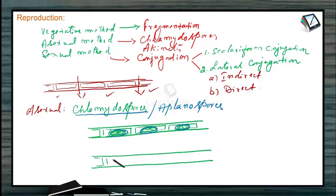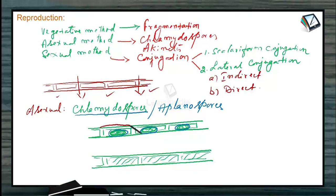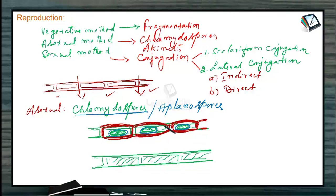Echinates: in echinates, the protoplasm does not condense. The cell remains as it is, and each cell develops or forms a thick wall around it. This thick wall makes it resistant to unfavorable conditions, and they can survive for long periods under drought conditions.